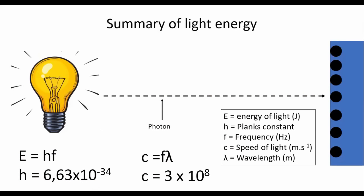So here's the summary. We know that the amount of energy is calculated using HF where H is 6.63 times 10 to the minus 34. And then sometimes we will also use this formula over here. And we say here that E is the energy of the light. H is Planck's constant. F is the frequency. C is the speed of light. And Lambda is wavelength.